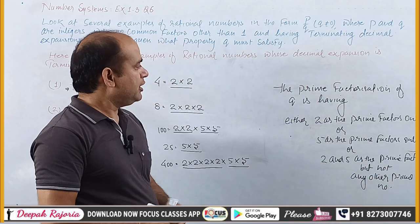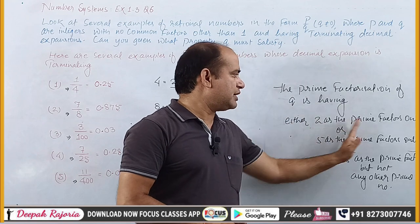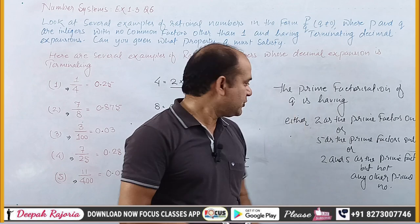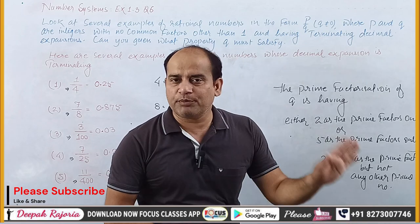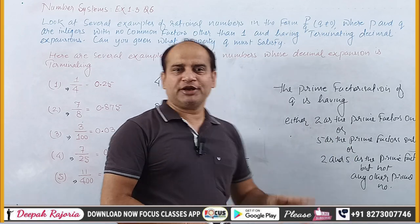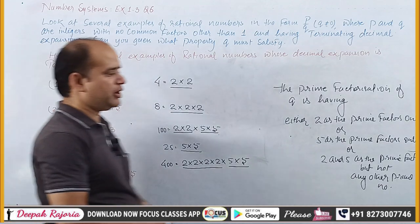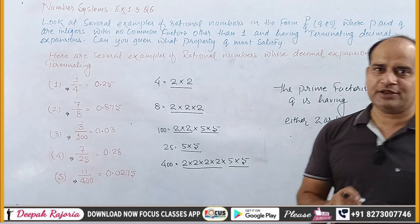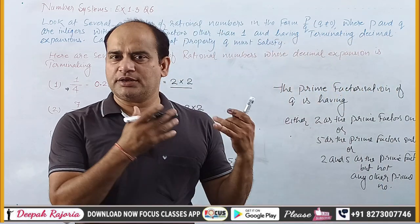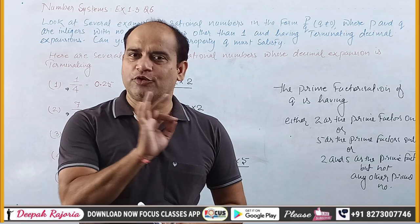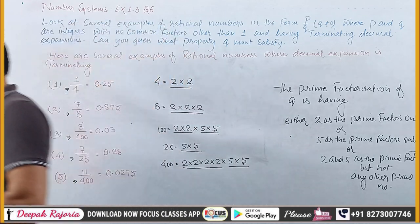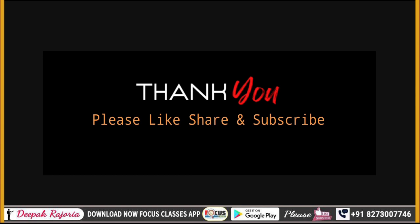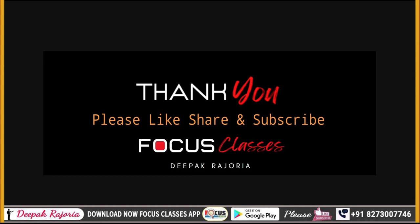ठीक है, तो यही हम लोगों ने दिखाया — the prime factorization of Q is having either 2 as the prime factor only, या तो सिर्फ 2 ही as a prime factor रहेगा। आप लोगों को अच्छे से समझ आया हो तो please like करना है, channel को subscribe करना है, और बाकी इसी तरीके के questions के लिए playlist में जाइए। मैं फिर मिलूँगा एक नए concept के साथ — till then, keep learning, and thank you for watching this video.